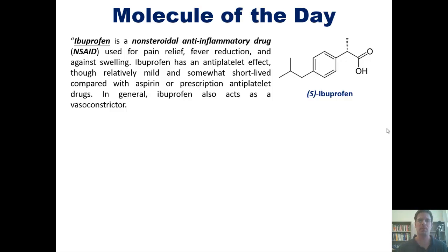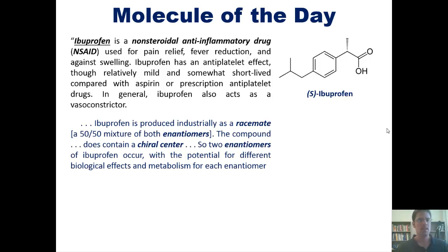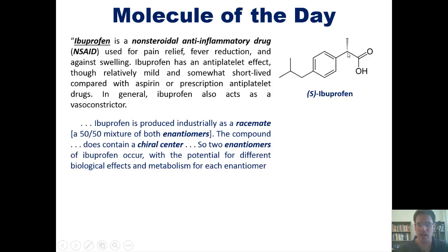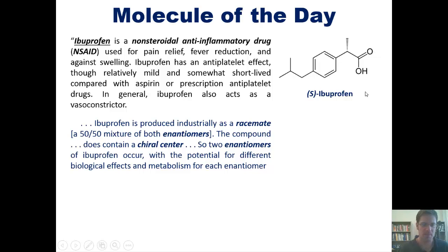Ibuprofen has an antiplatelet effect, though relatively mild and somewhat short-lived compared with aspirin or prescription antiplatelet drugs. In general, ibuprofen also acts as a vasoconstrictor. Ibuprofen is produced industrially as a racemate, which is a 50-50 mixture of both enantiomers. The compound does contain a chiral center or stereocenter — this carbon atom has a bond pointed three-dimensionally away from us, with a hydrogen implied pointing three-dimensionally towards us, and two different groups to the right and left.